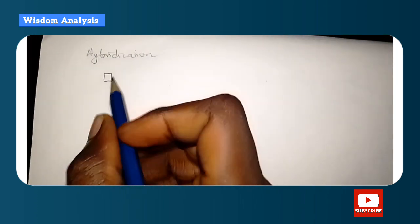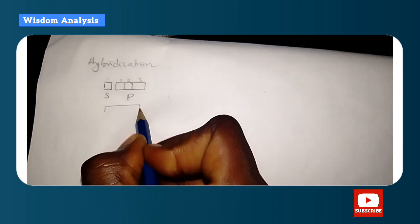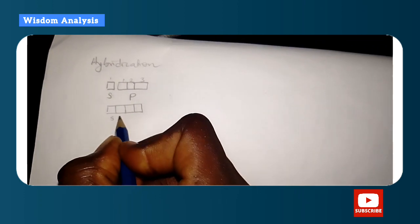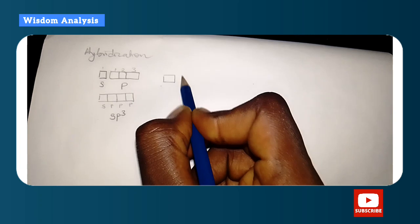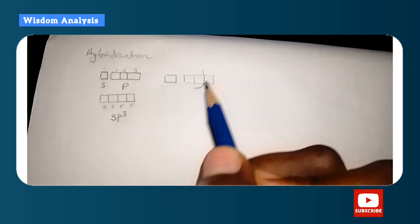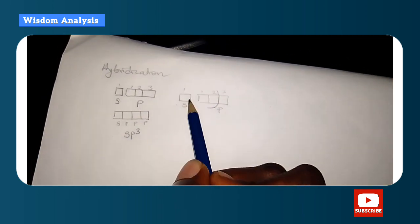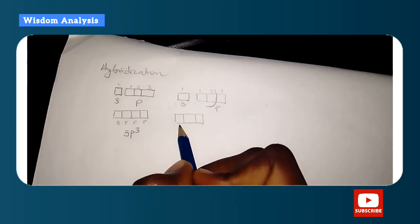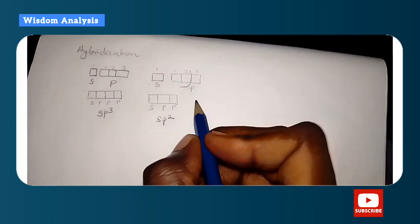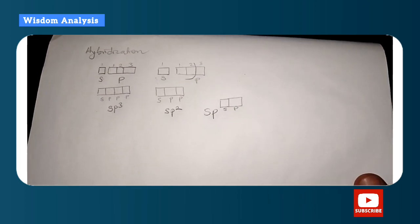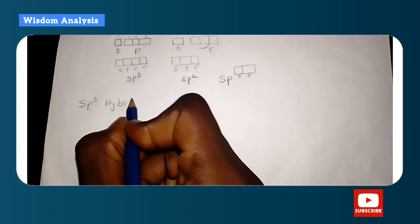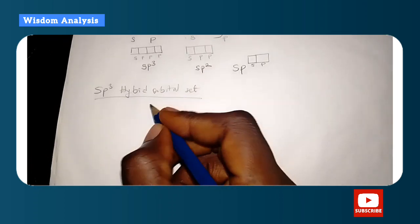Now let's go to hybridization. Hybridization is simply the mixing of different orbitals to form a new hybrid orbital. If one s orbital and three p orbitals combine, they form the sp³ hybrid orbital set. If one s and two p orbitals combine, they form sp². If one s and one p combine, they form sp.